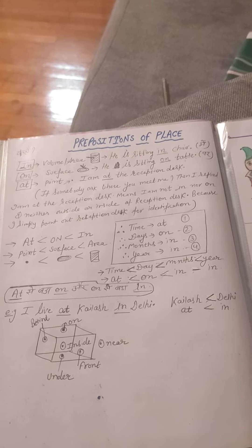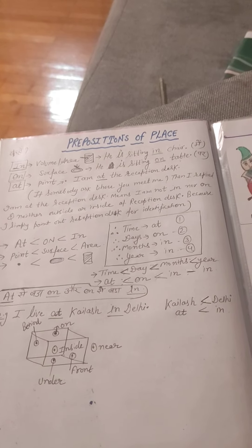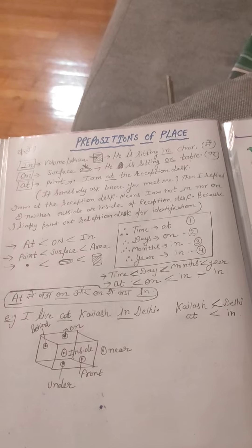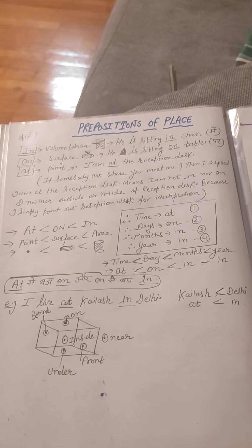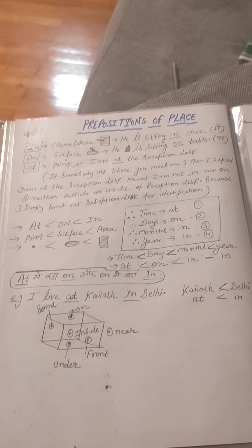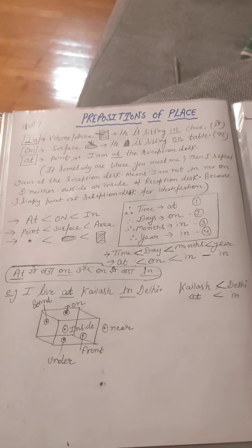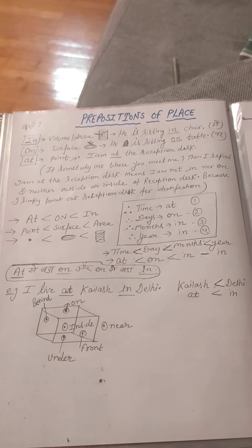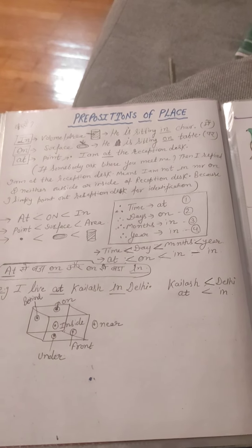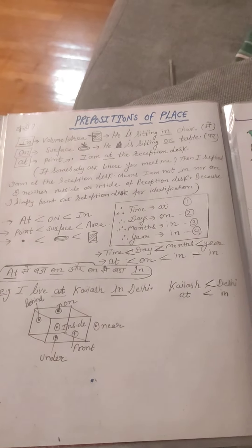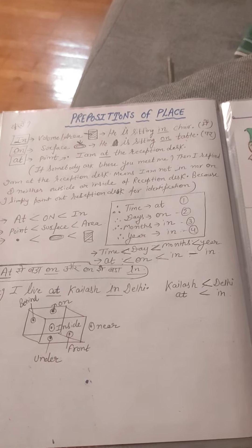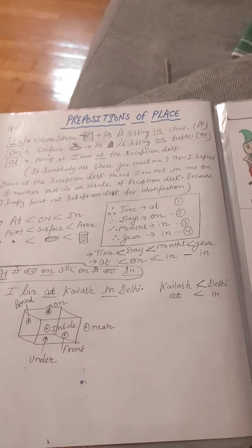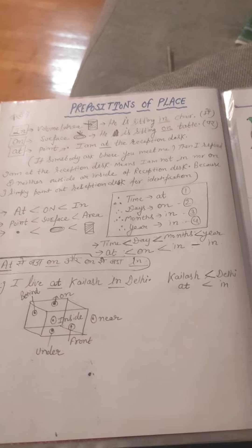So here is a concept: time, day, months, year — at, on, in, in. At se bada on, on se bada in. I live at Kailash in Delhi. Kailash — at; Delhi — in. At se bada in.